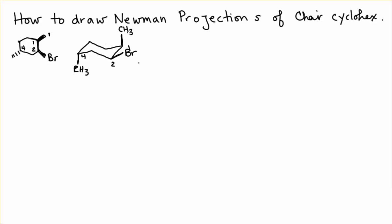This is not the most stable chair conformation. The most stable chair conformation would have the bromine in the axial position and the methyl groups in the equatorial position. But I'm going to draw the Newman projection of this to show why this is not the most stable conformation.